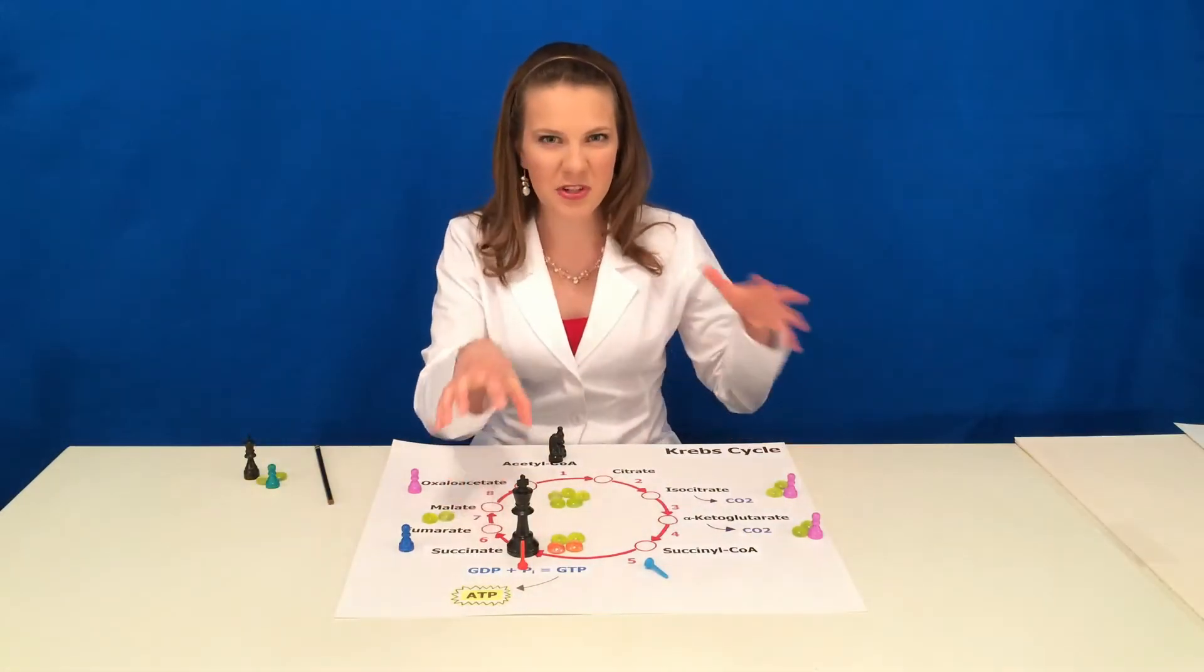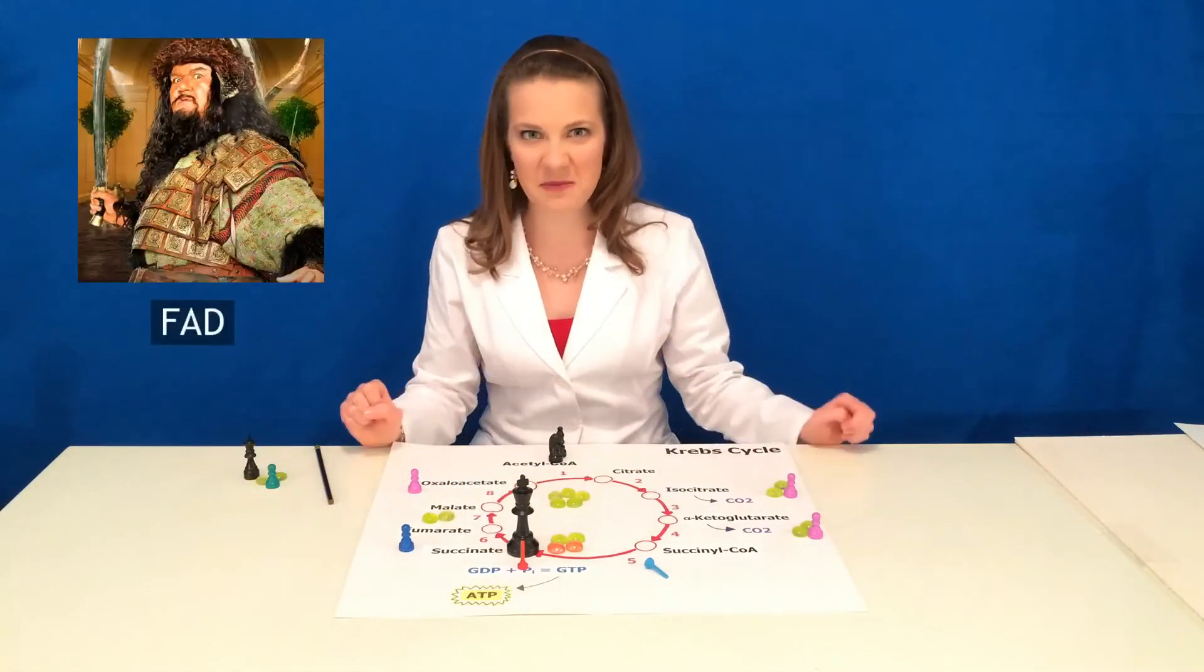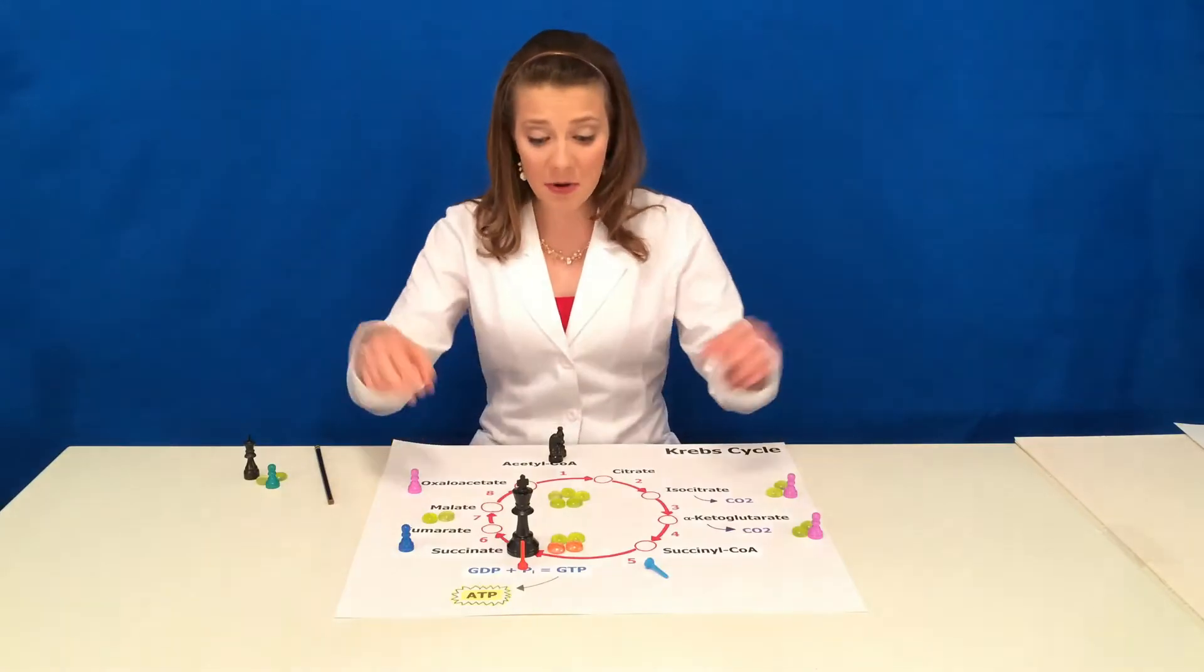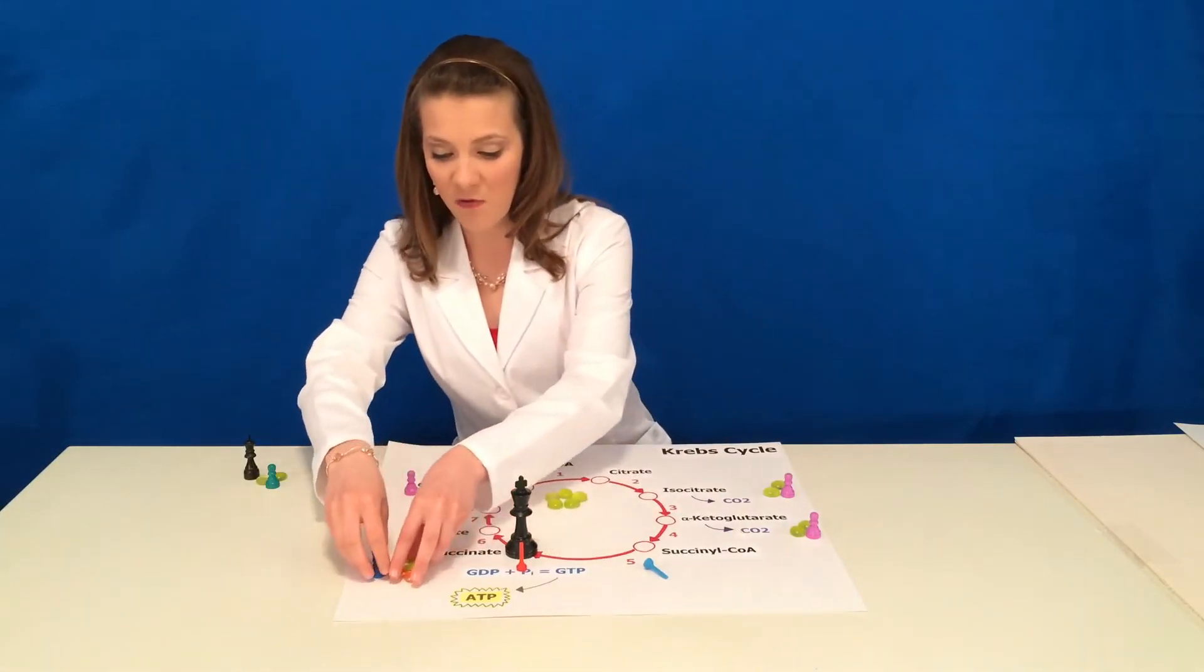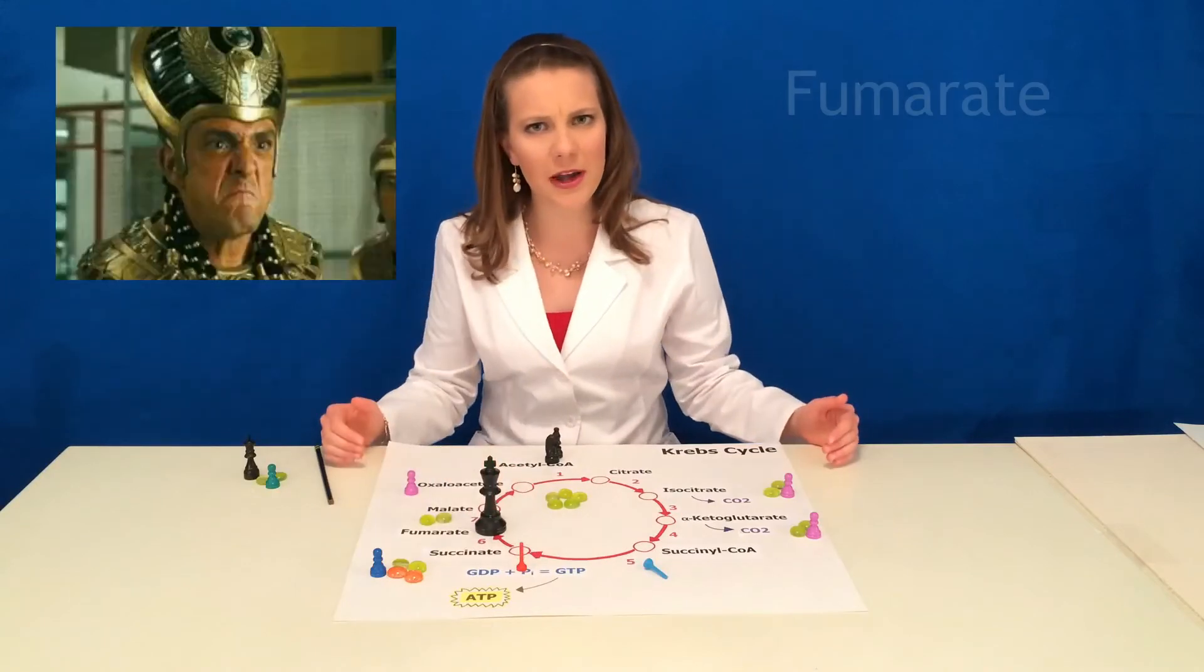In step six, succinate comes under attack by an electron-hungry warmonger named FAD. Not only does FAD take two electrons, but also two protons, forming a very furious fumarate molecule.